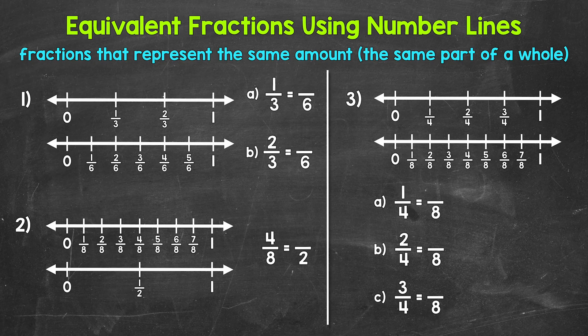Let's jump into number one, where we have two number lines. The top number line is showing thirds — there are three equal parts between 0 and 1. The bottom number line is showing sixths — there are six equal parts between 0 and 1. We're going to find two equivalent fractions here. As far as equivalent fractions on number lines, they are going to be at the same place on a number line — the same position.